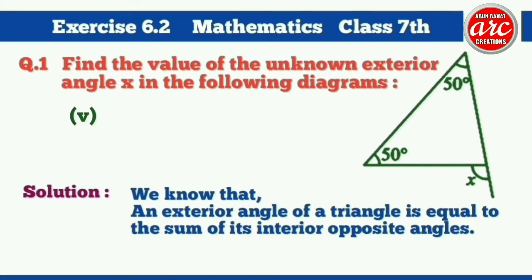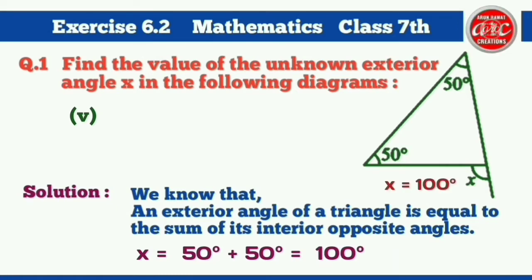Part 5 solution: As we know, an exterior angle of a triangle is equal to the sum of its interior opposite angles. So X is equal to 50 degrees plus 50 degrees, which is equal to 100 degrees. So our answer, angle X, is equal to 100 degrees.